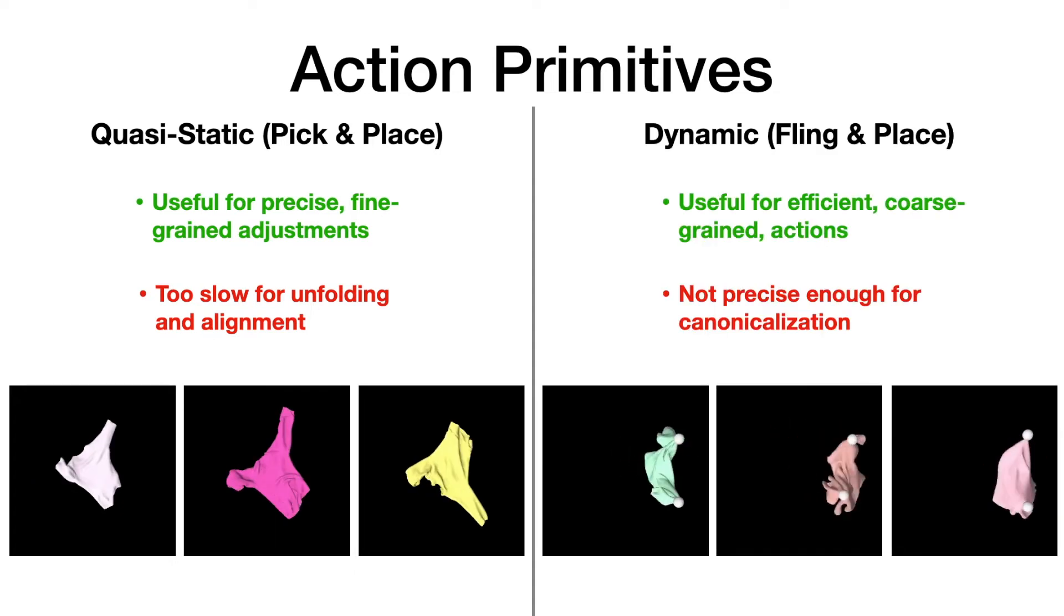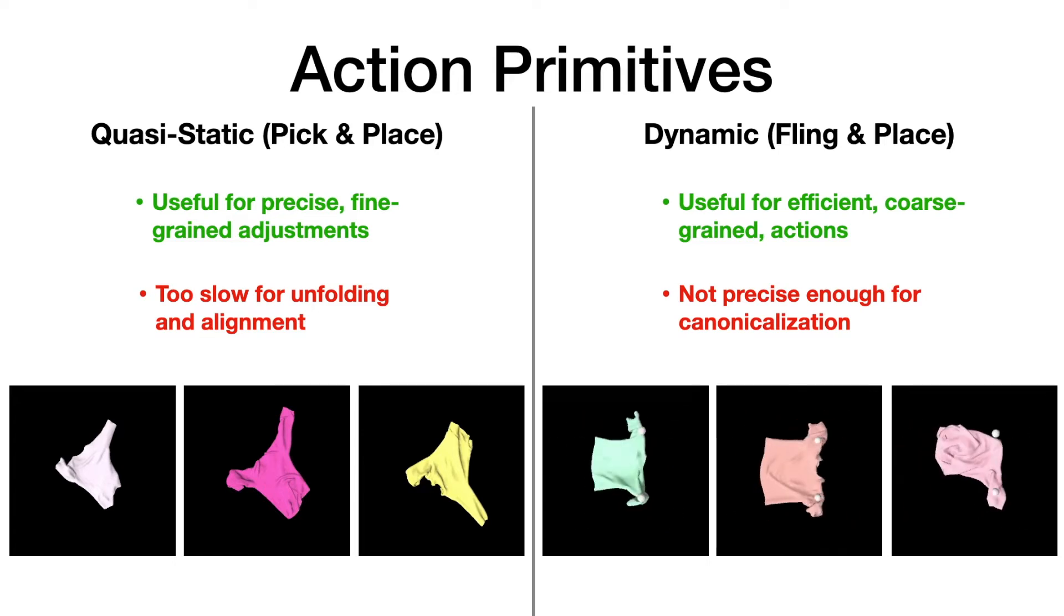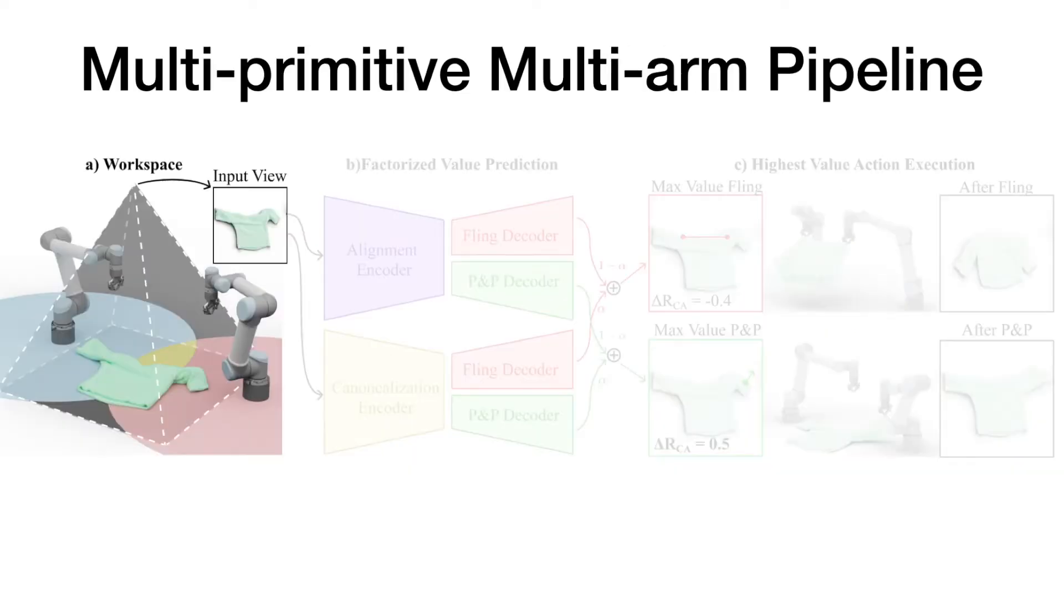On the other hand, dynamic flings can unfold very efficiently, but they can't make fine-grained adjustments to get a cloth to a canonicalized state. Since these primitives address each other's weaknesses, we combine them both in a multi-primitive multi-arm setup for canonicalized alignment.